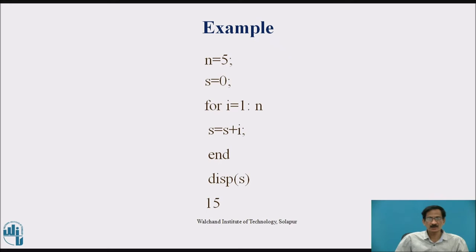Example: n equals to 5, s is equal to 0. For i is equal to 1 colon n, s is equal to s plus i, and display s. In this example, I have declared a constant n equal to 5, another variable s equal to 0. The variable i changes from 1 to n, that is 1 to 5, entering the for loop.